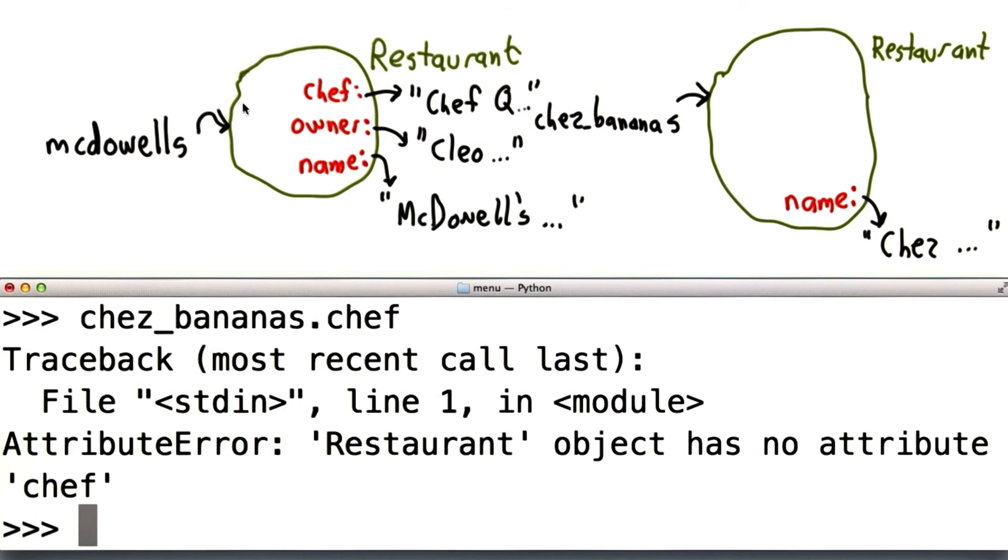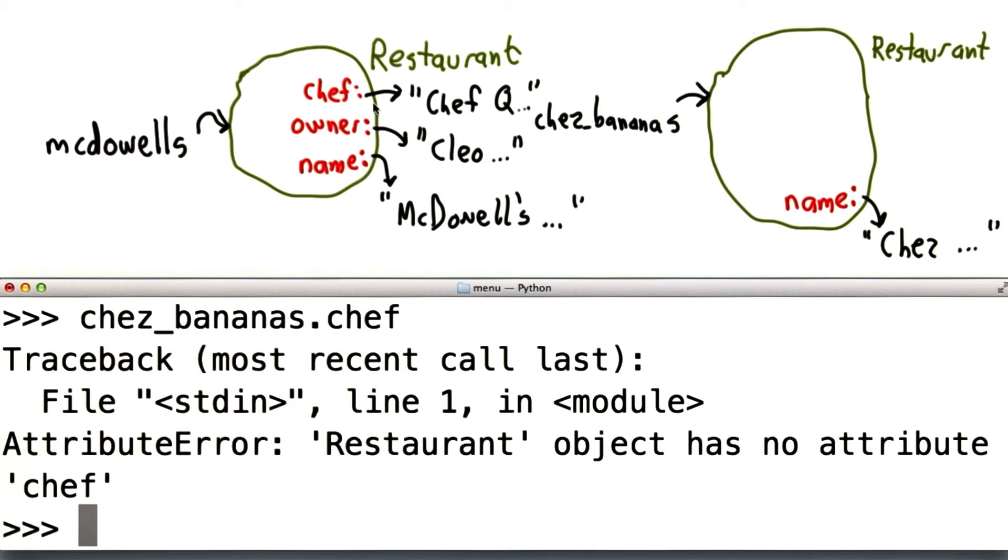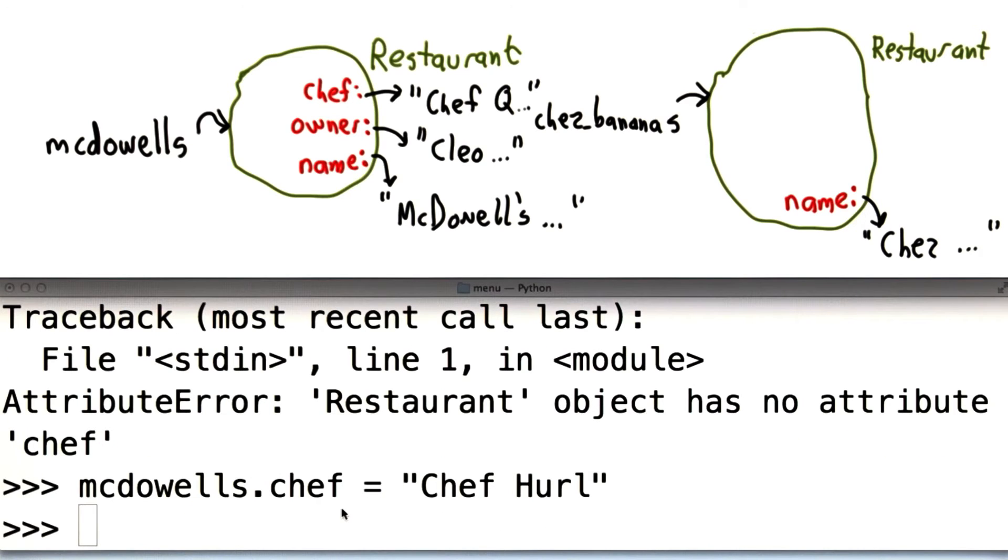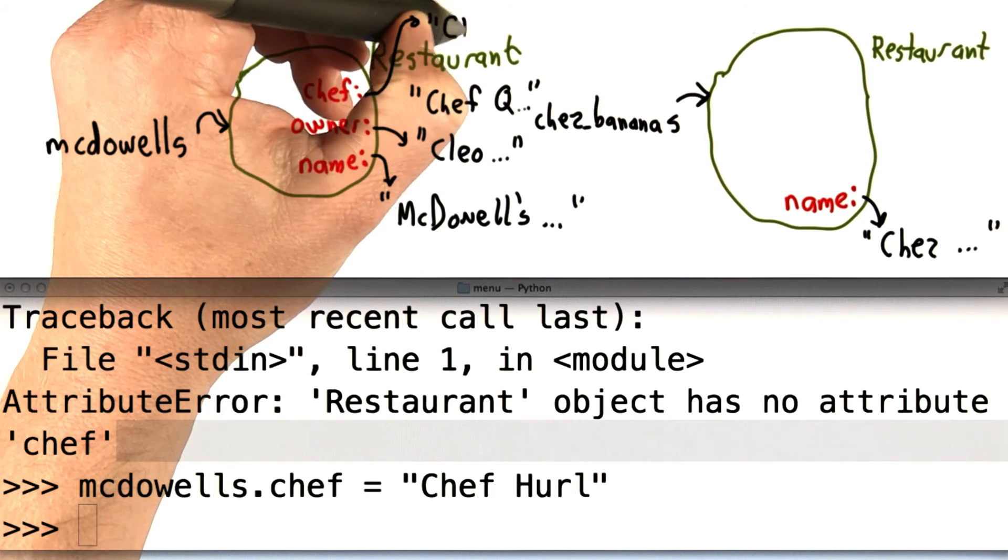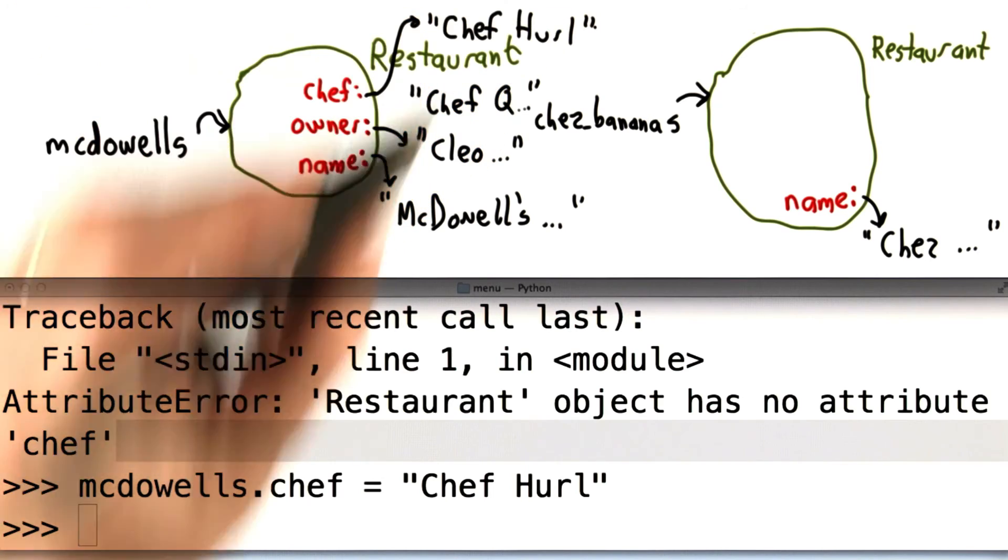Just like any other name, we can change what a name refers to. So we can change what an attribute refers to. We'll do that just with an assignment. So suppose Chef Queasy was fired. We have a new chef at McDowell's. We have Chef Hurl. And that'll change the value associated with this name. Now the Chef attribute points to the string Chef Hurl. Sounds very yummy to me.